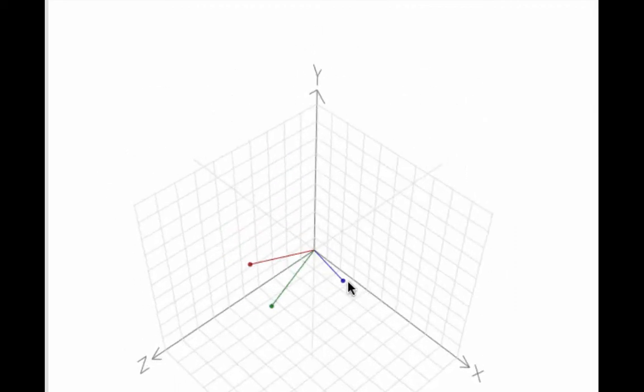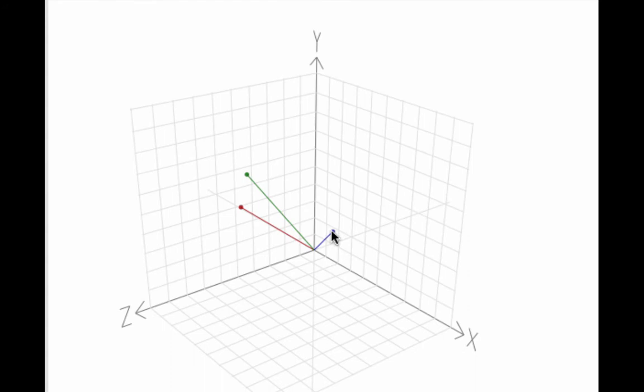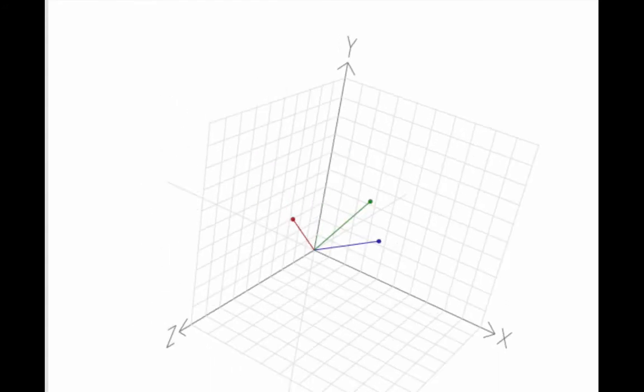There's our vector 7, 9, 9. Let's make it easier to see how the parallelogram rule applies by drawing a vector that goes from the end of our second vector to our vector sum and the end of our first vector to our vector sum.